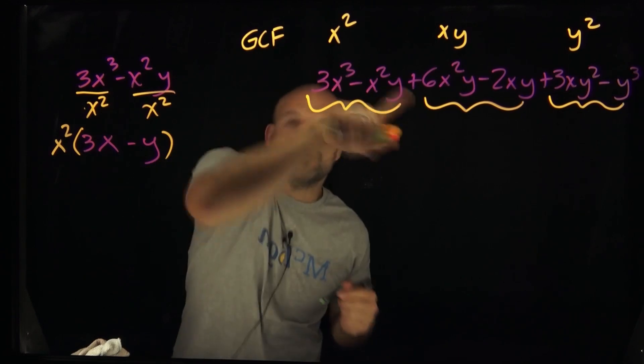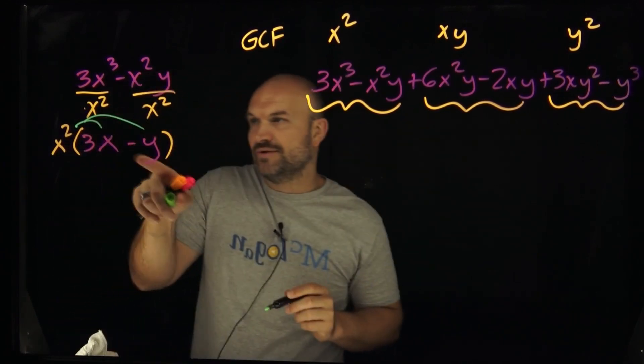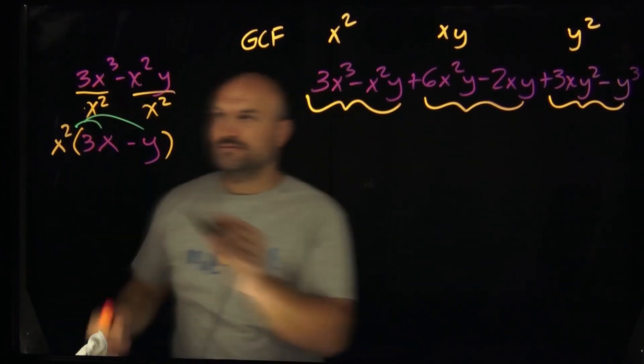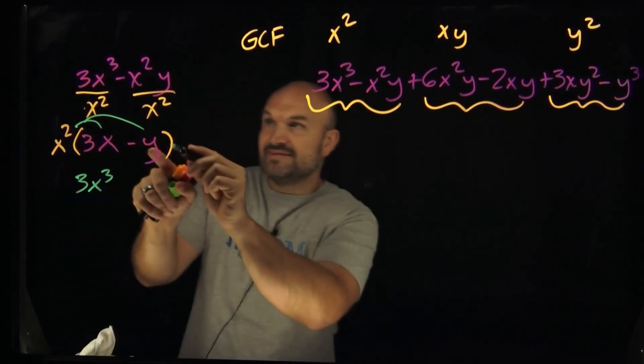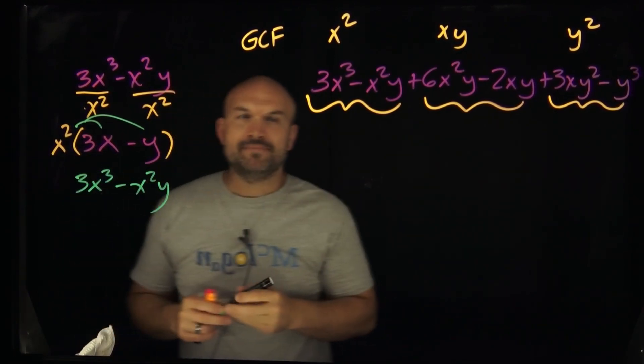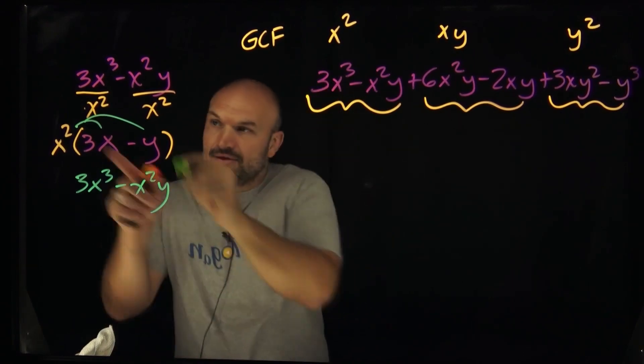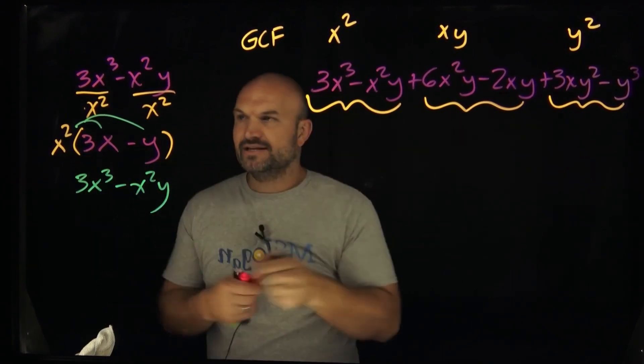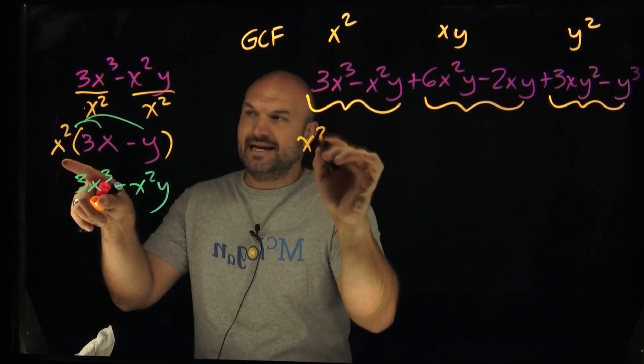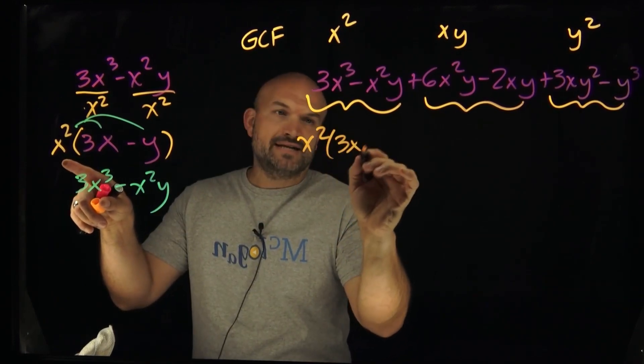Now, again, we can always go back and check our work. When we multiply this x squared times a 3x and times this negative y, is that going to give us back our original example? x squared times 3x is going to give you a 3x cubed. And then x squared times a negative y is going to give us a negative x squared y. So what we're going to do is identify that greatest common factor, divide it evenly into those terms, and then rewrite it as a multiplication problem. We already did this one correctly. So this is going to be an x squared times a 3x minus a y.